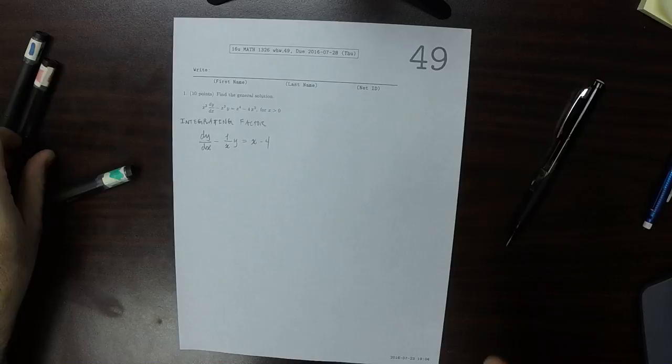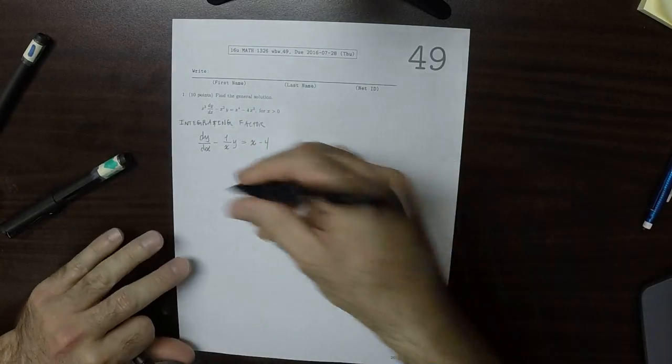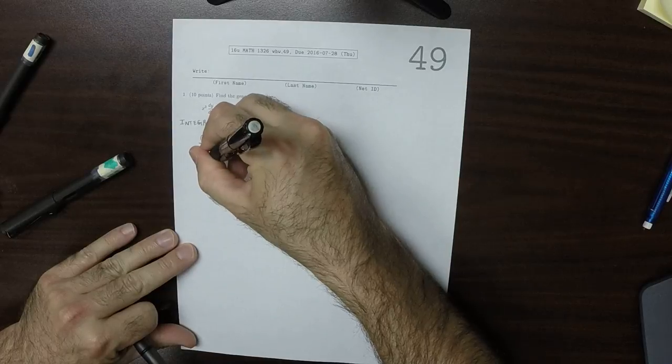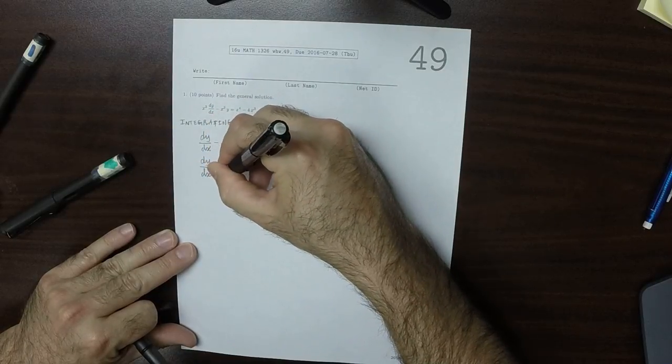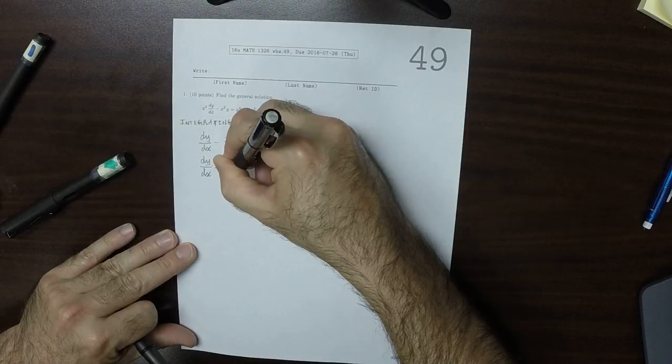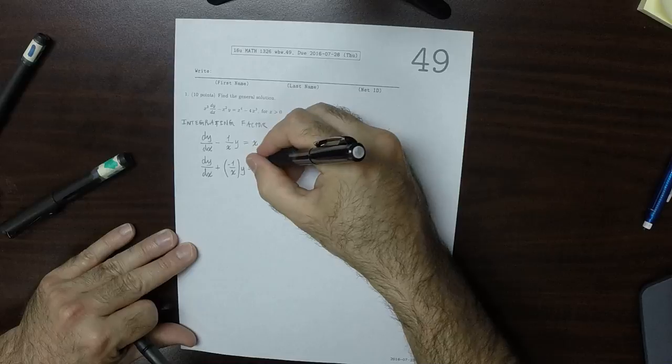So that's telling us, maybe one more small step, dy dx plus negative 1 over x, y, is x minus 4.